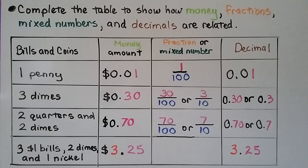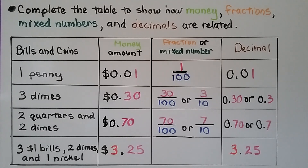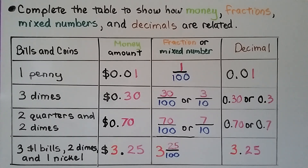For three one-dollar bills, two dimes, and one nickel: the money amount is $3.25, and as a decimal it's 3 and 25 hundredths. We need to write it as a fraction or mixed number. Because there are dollars to the left of the decimal point, we write it as a mixed number: three and 25 hundredths. We can simplify — 25 hundredths is one quarter, and there are four quarters in a dollar — so this is three and one-fourth.